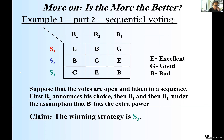First B1 announces his choice, then B2 announces her choice, and then B3 announces his choice. We are under the same assumption that B1, the CEO, has the extra power. I claim the winning strategy is S3.